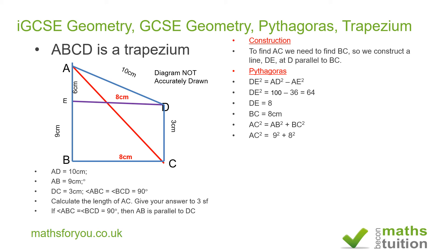AC² becomes 9² plus 8², and 9² is 81 and 8² is 64. So AC is the square root of the sum of 81 and 64. AC is the square root of 145, so AC is 12.041 centimeters. Because we need to give the answer to 3 significant figures, AC is 12.0 centimeters.